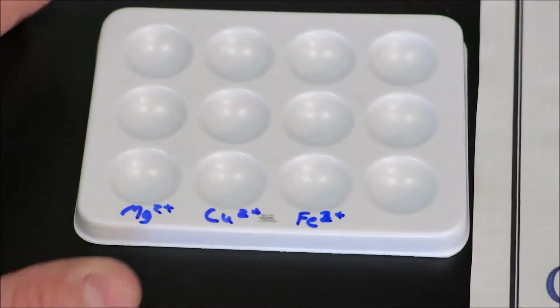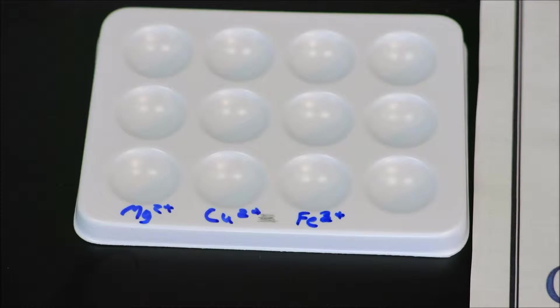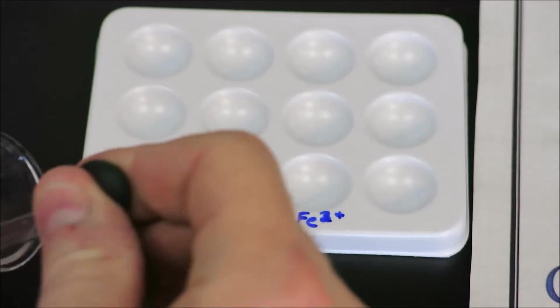My mistake, iron two-plus ions. We'll place a small volume of the three solutions in each of those wells. So our first well will be magnesium ions.